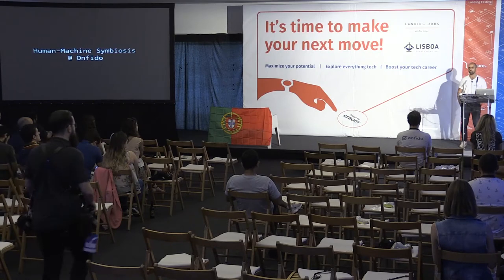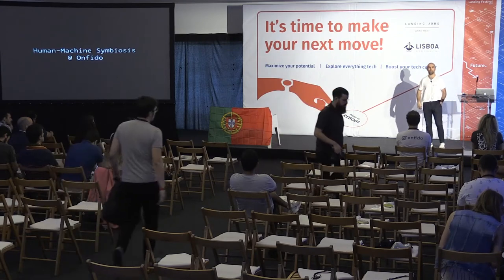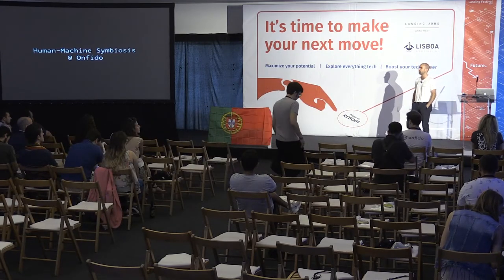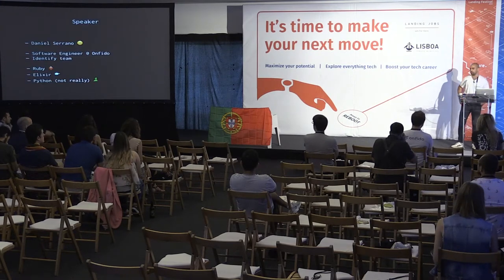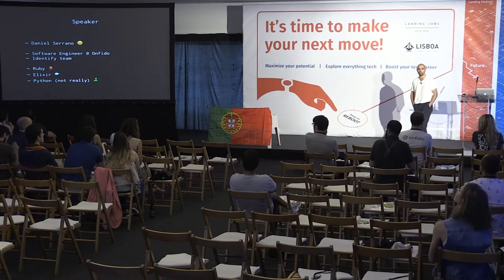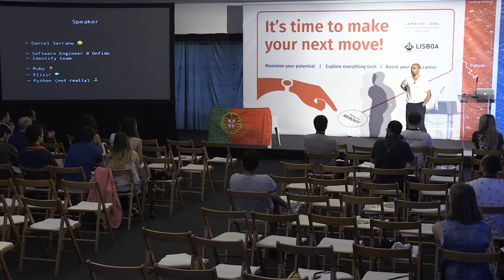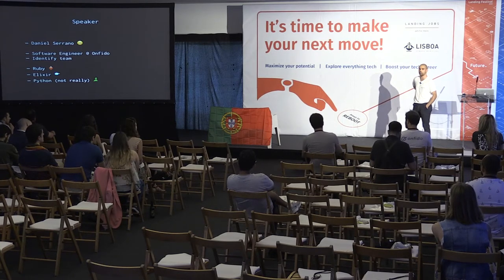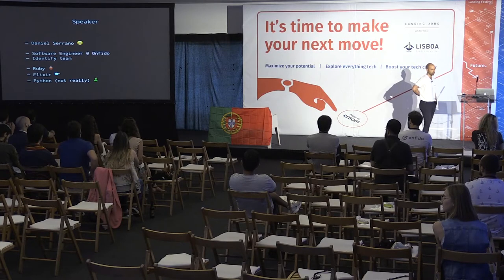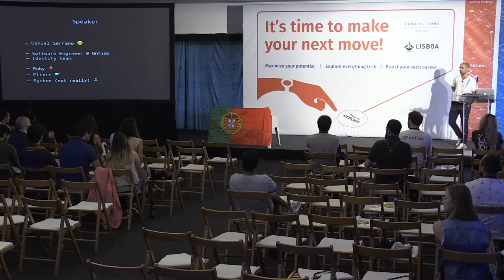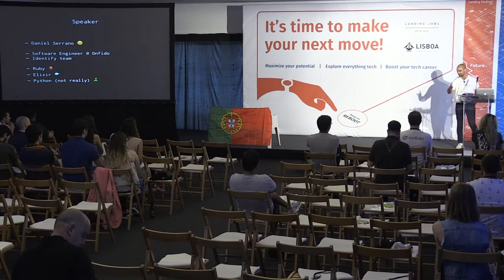Today's talk is going to be on human-machine symbiosis at Onfido - what we're doing there to automate identity verification online. My name is Daniel Serrano. I studied at Technical Lisboa here in Lisbon. I'm a software engineer in the Identify team. I work these days mostly with Ruby, Elixir, and a tiny bit of Python, though we have much better people at Python than me.